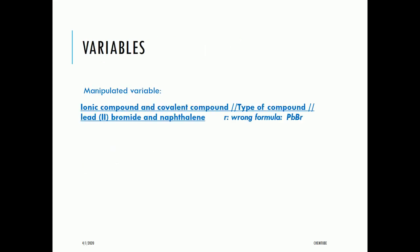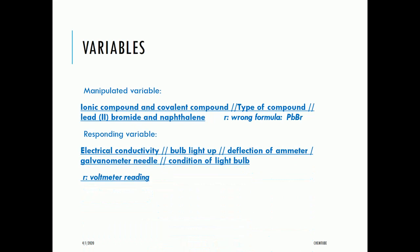The manipulated variable is the type of compound — ionic compounds and covalent compounds, for example lead bromide and naphthalene (reject wrong formula, e.g., Pb). The responding variable is electrical conductivity — bulb lighting up, deflection of ammeter or galvanometer needle, or condition of the light bulb (reject voltmeter reading). The fixed variable is the carbon electrodes (reject 'type of electrode').